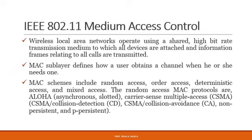Wireless local area networks operate using a shared high bit rate transmission medium to which all the devices are attached and the information frames relating to all the calls are transmitted. The MAC sublayer defines how a user obtains a channel when he or she needs one. MAC schemes include random access, order access, deterministic access, and mixed access.